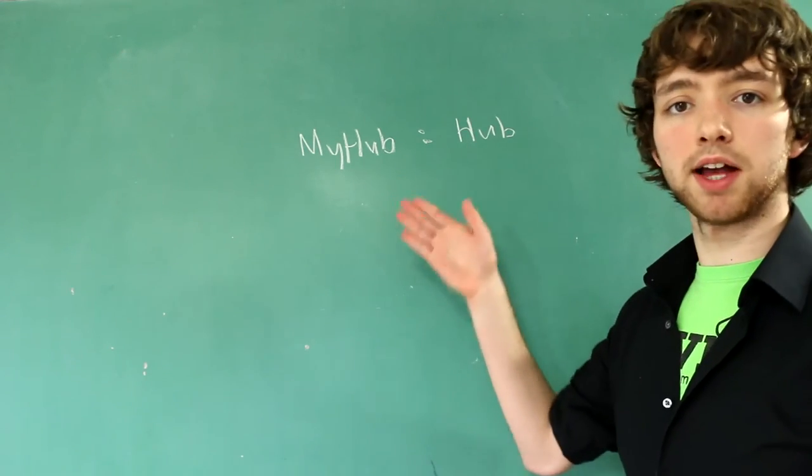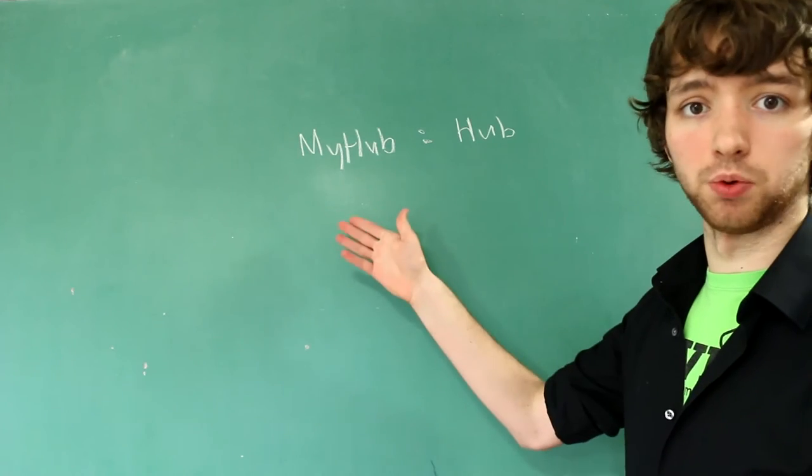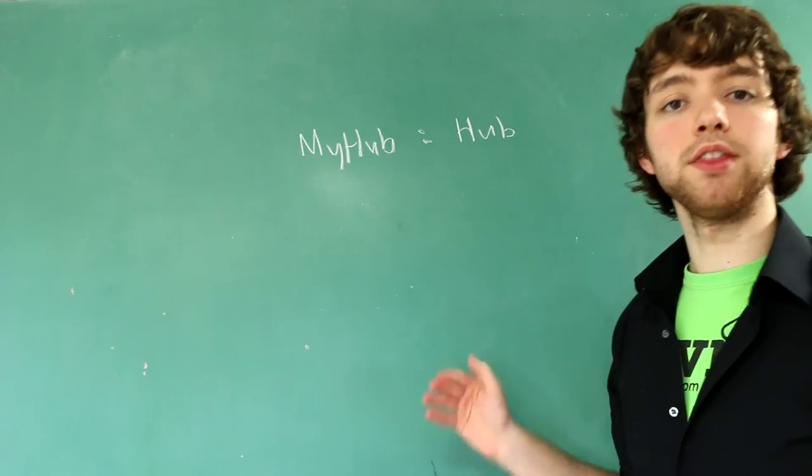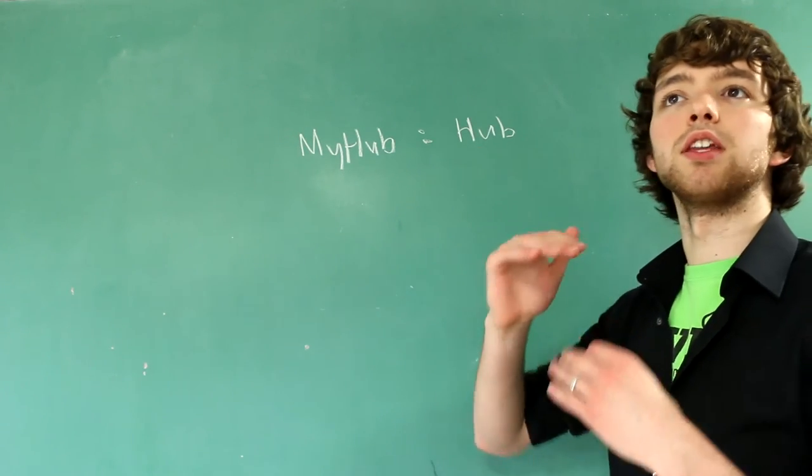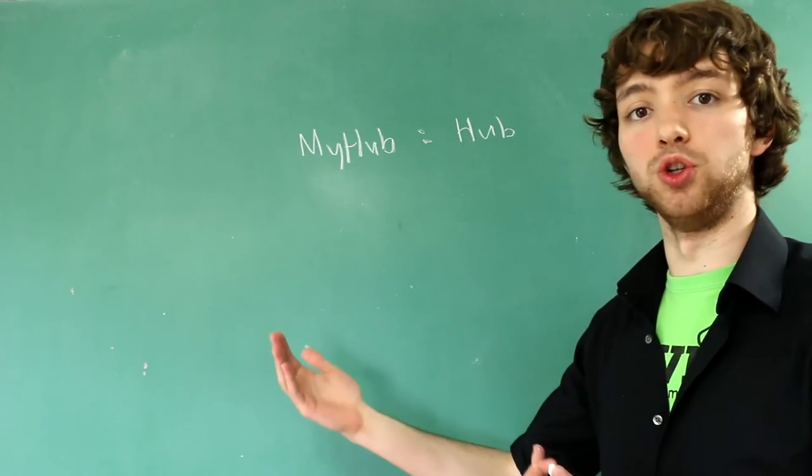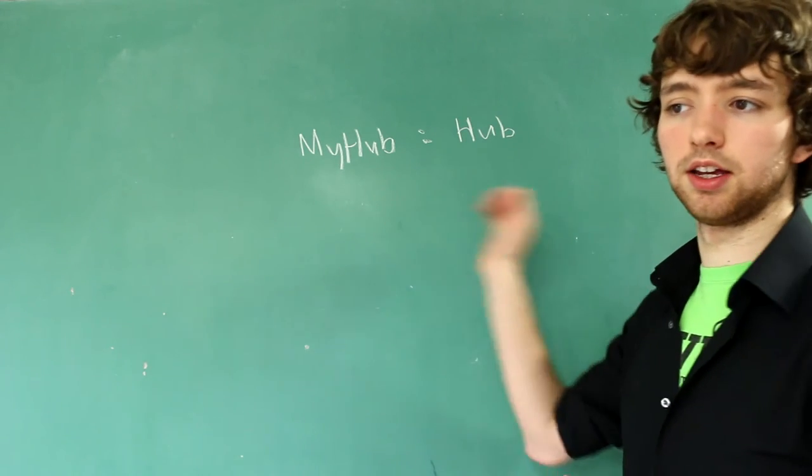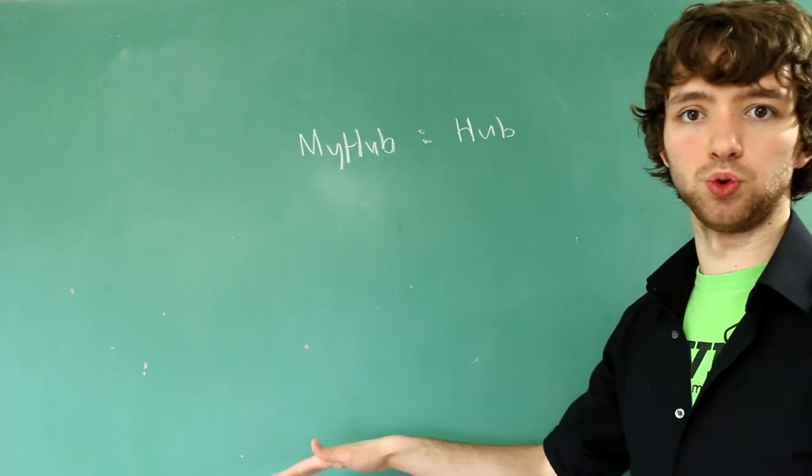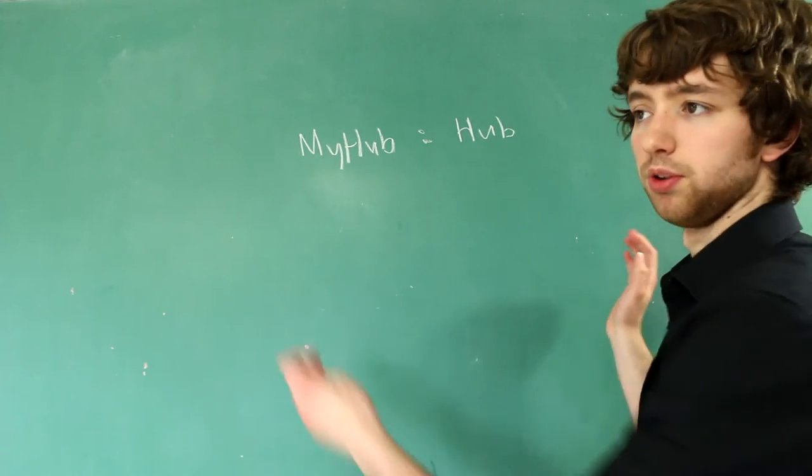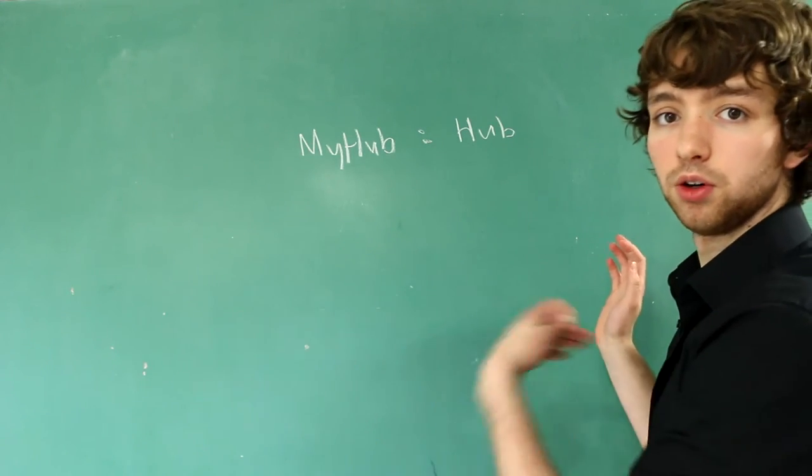We are going to instantiate this when somebody goes to our website. We create a MyHub instance. Within this MyHub class, which by the way you can name whatever you want, you're going to put methods of things that you want the client to be able to tell the server to do. This defines what the client can command the server to do. We're also going to make it so the server can tell the client what to do.